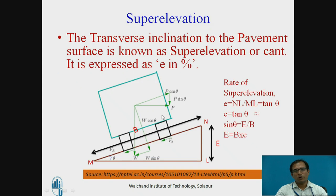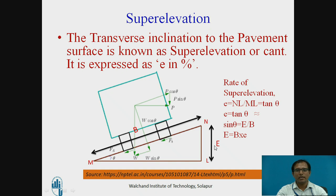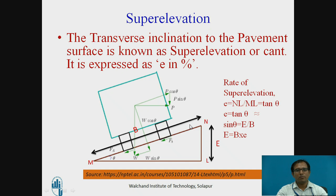To overcome overturning and lateral skidding, we raise the outer edge of the pavement with respect to the inner edge. This raising of the outer edge with respect to the inner edge is called super-elevation, or cant. Giving a transverse inclination to the pavement surface is known as super-elevation. It is expressed as E in percentage or 1 in N. The rate of super-elevation E = NL/ML = tan θ. Since θ is very small and tan θ seldom exceeds 0.07, practically tan θ = sin θ, giving sin θ = E/B. The raising of the pavement equals B × E, where B is the width of the pavement.